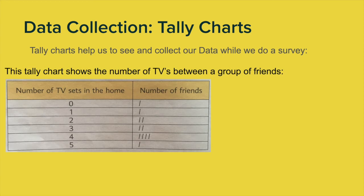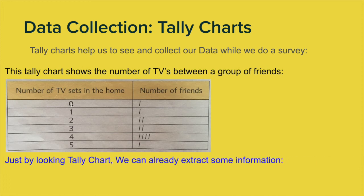This tally chart shows the number of televisions among a group of friends — specifically, how many TVs they have in their house. On the left we have 'number of TV sets in the home,' going from zero to five. Now, the person doing this survey didn't put these numbers down at first, because there's no way he would have known. It's very important that it's open to change — for instance, one of his friends could have had six or seven televisions.